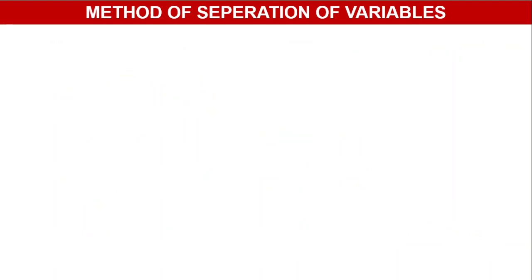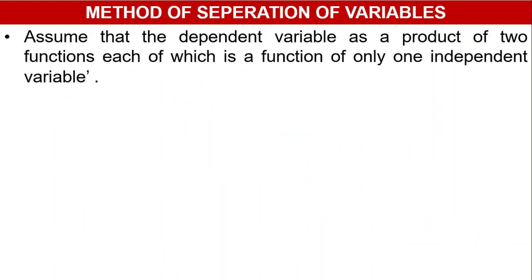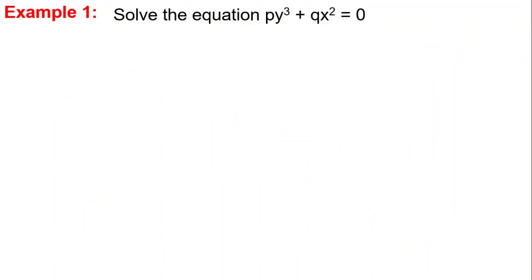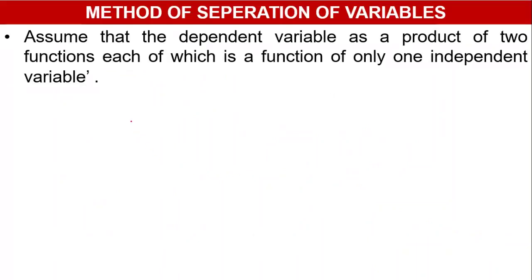Now, the method of separation of variables: in this method, we assume that the dependent variable is the product of two functions, each of which is a function of only one independent variable. For example, z = f(x, y) is a function of two variables where z is the dependent variable.